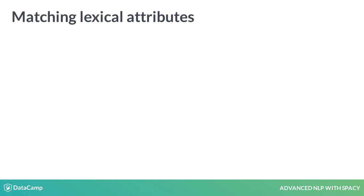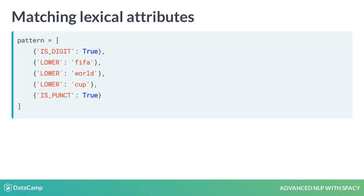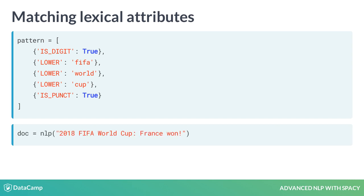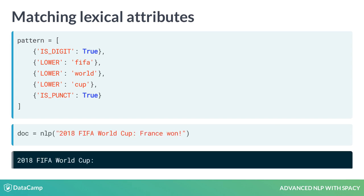Here's an example of a more complex pattern using lexical attributes. We're looking for five tokens: a token consisting of only digits, three case-insensitive tokens for 'FIFA', 'World', and 'Cup', and a token that consists of punctuation. The pattern matches the tokens '2018 FIFA World Cup:'.